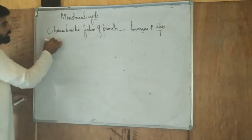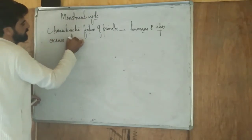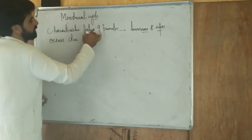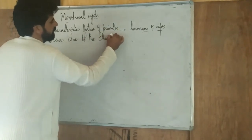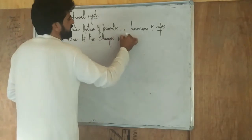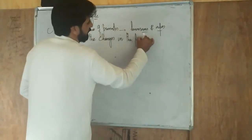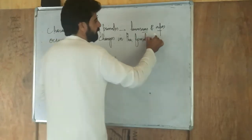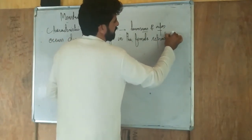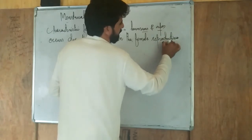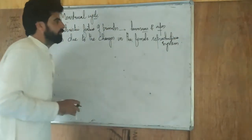The menstrual cycle occurs due to changes in the female reproductive system. What are the changes which take place in the female reproductive system?